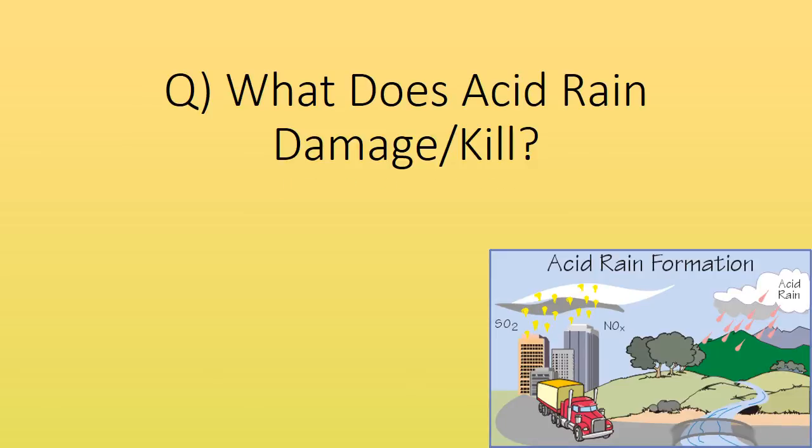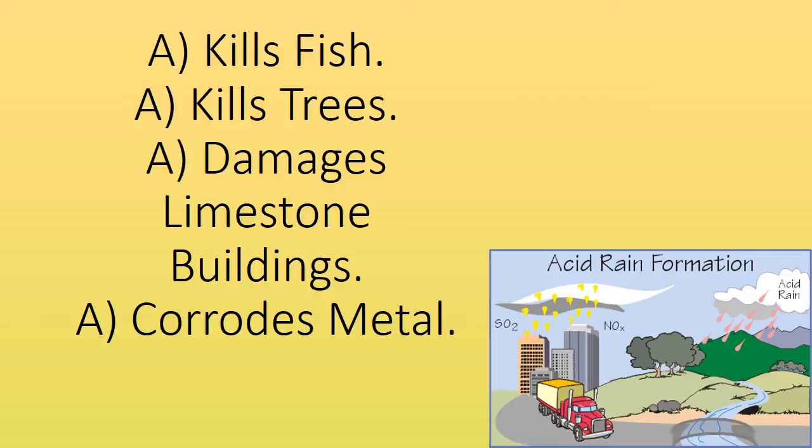What does acid rain damage or kill? It kills fish, kills trees, damages limestone buildings, and corrodes metal.